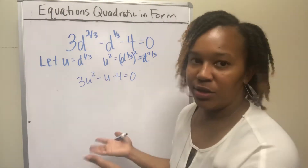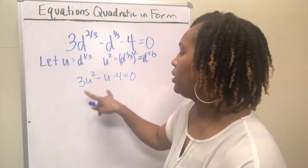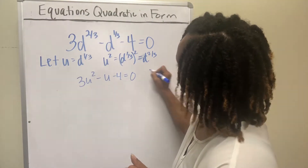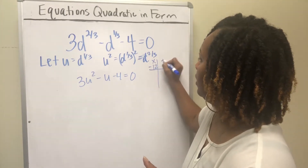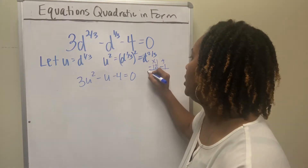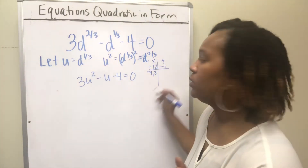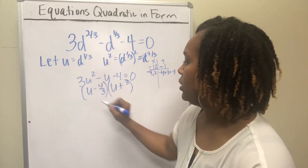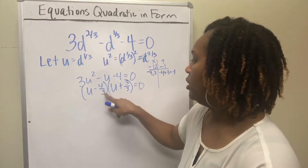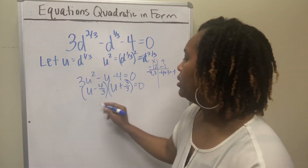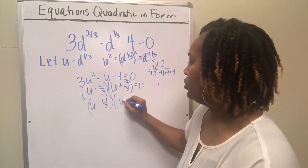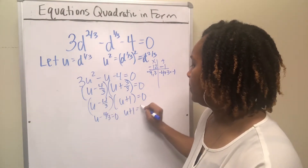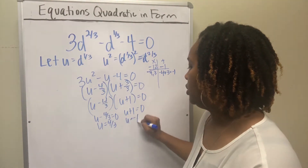You end up with 3u² − u − 4 = 0. Now you want to solve this quadratic equation. You could absolutely use the quadratic formula, but this one will actually factor. Take factors of 3 times −4, which is −12, that add to −1. That's going to be −4 and positive 3: −4 times 3 is −12, and −4 plus 3 is −1. This factors into (u − 4/3)(u + 1) = 0, dividing by 3 since there's a number in front. Setting both equal to zero, you get u = 4/3 and u = −1.